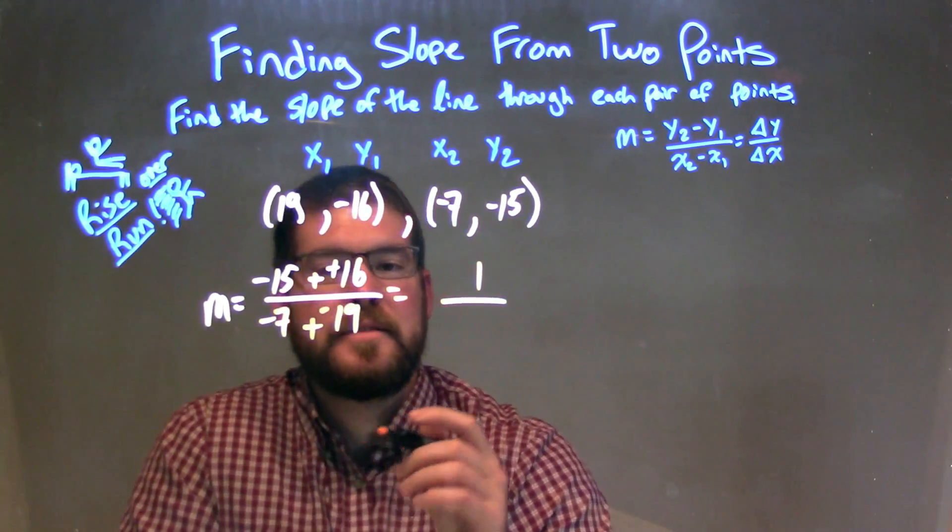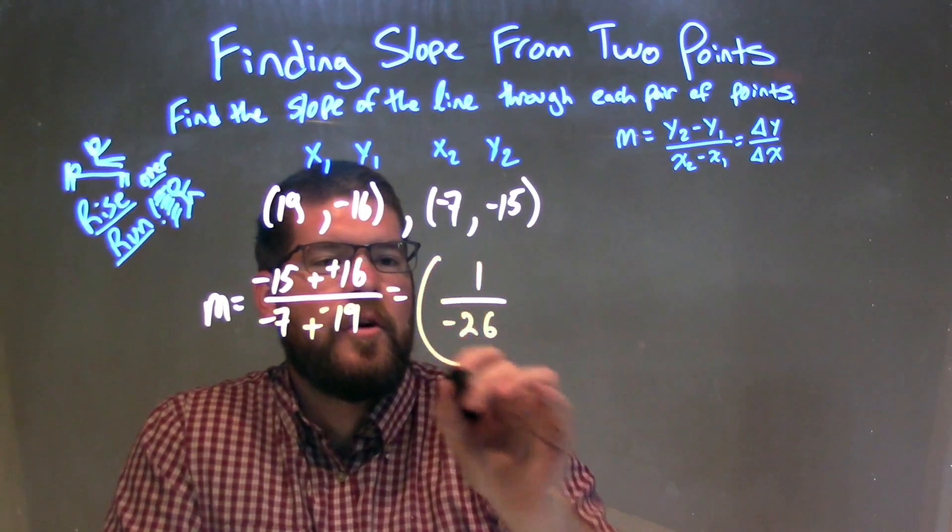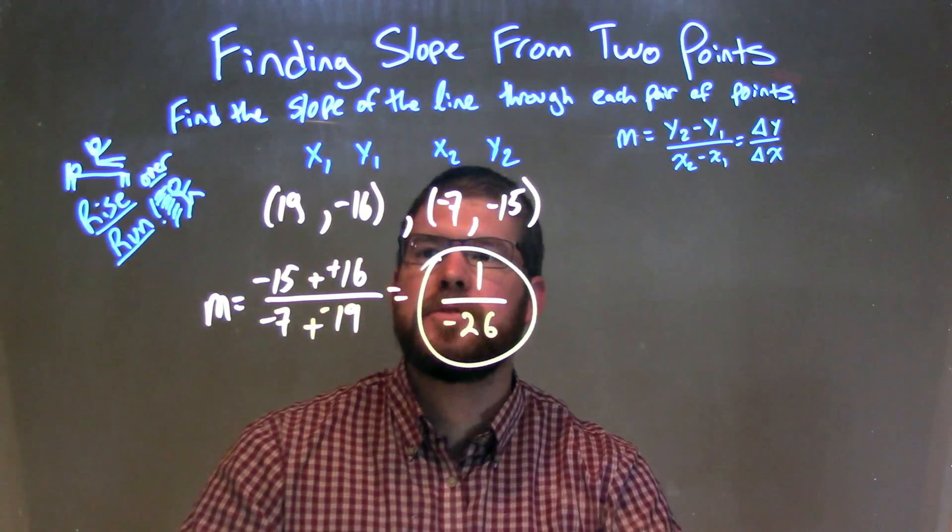So negative 7 plus a negative 19 is a negative 26, and there's our slope. There's our answer: 1 over negative 26. So let's recap.